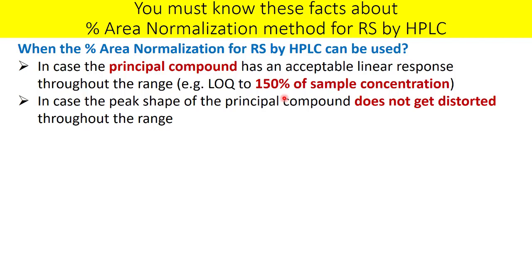Even if linearity is confirmed to 600 ppm, at higher concentrations the peak shape can get distorted — it may plateau, flatten at the apex, or produce an M-shaped peak. At 100% of the sample concentration (400 ppm) the peak shape may be fine, but you must also confirm the peak shape is acceptable at 150% (600 ppm). If tailing is below your system suitability criteria, percent area normalization can be used.